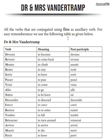Now, the first thing is you have to learn what the past participles of these verbs are. So let me start. D in Dr. Mrs. Vandertram stands for devenir, that is 'to become,' and the past participle is devenu.